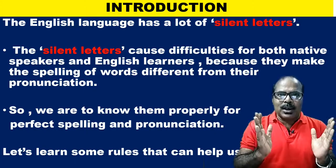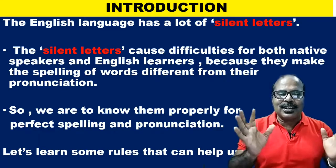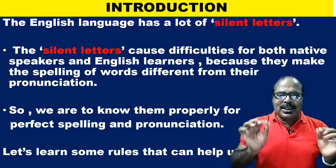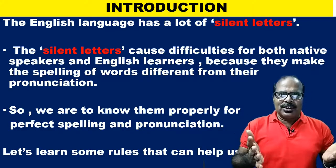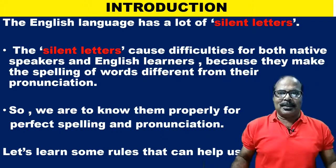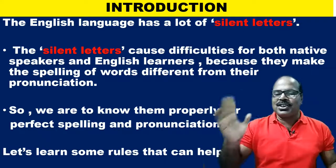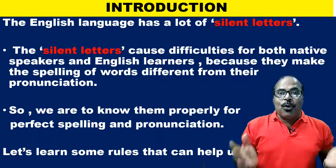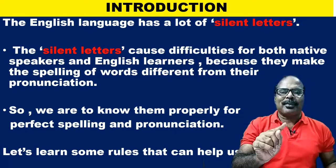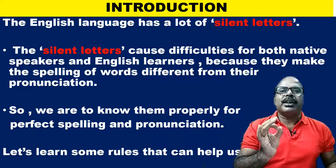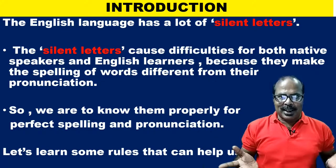The English language has a lot of silent letters. These silent letters cause difficulties for both native speakers and English learners, because they make the spelling of words different from their pronunciation. So we have to know them properly for two things: for perfect spelling and also for perfect pronunciation. Let's learn the rules that can help us.